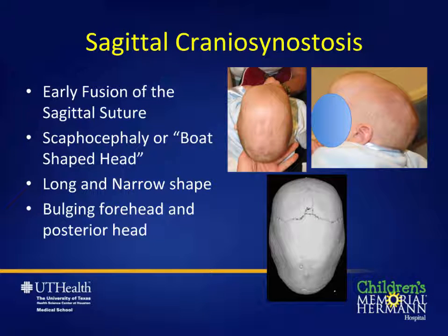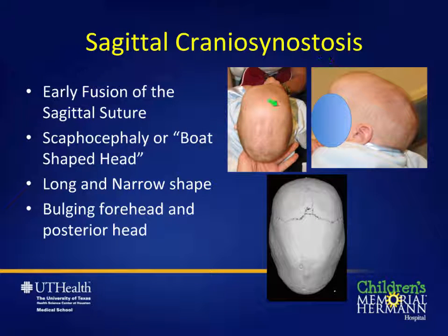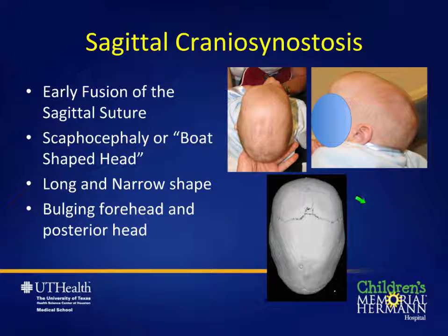Sagittal craniosynostosis is early fusion of the sagittal suture and is the most common form of single-suture craniosynostosis. It is also called scaphocephaly or dolicocephaly, meaning boat-shaped head. The head is long and narrow — much more so than normal. Looking from the top down and from the side, the head is very long and narrow. The child has a bulging forehead and a bulging back of the head, while the sagittal suture on CT scan is abnormally fused.